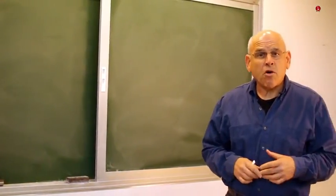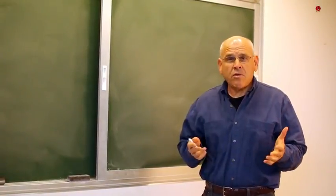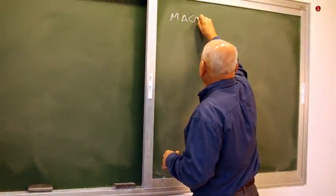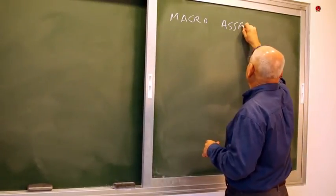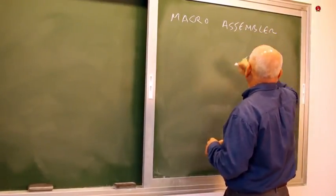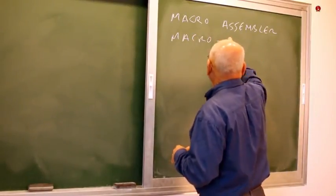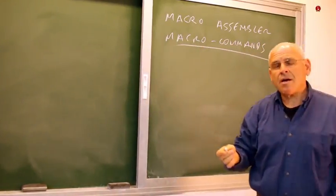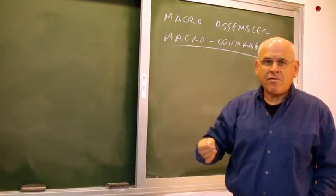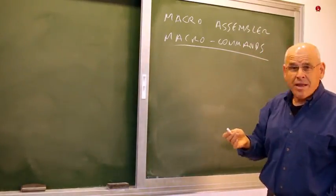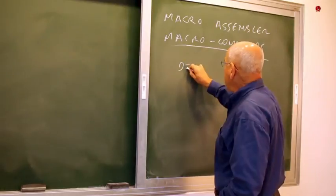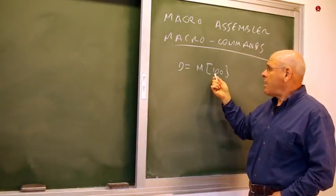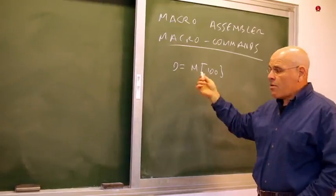How can we make the hack symbolic language more programmer-friendly? What we can do is introduce the notions of macro assemblers and macro commands. Let's take a typical operation like loading the D register with a value of some memory register. It is quite natural to think about a command that looks like this: D equals M at 100, which means go to register number 100, take its contents, and put it in the D register. This would be a natural thing to write.